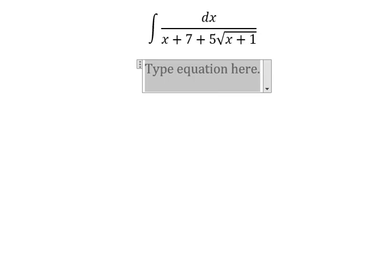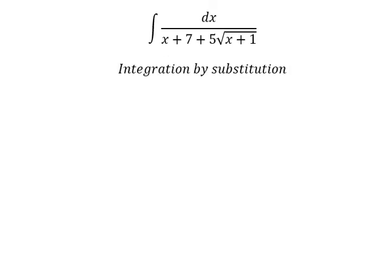We need to use integration by substitution. So we put u equals to this one. We put the square for both sides so that we can cancel the square root.